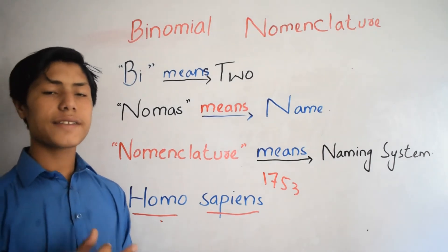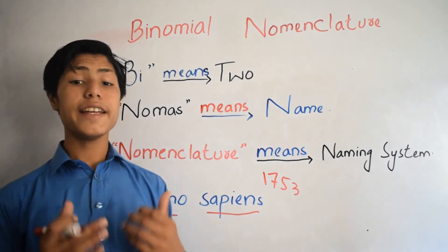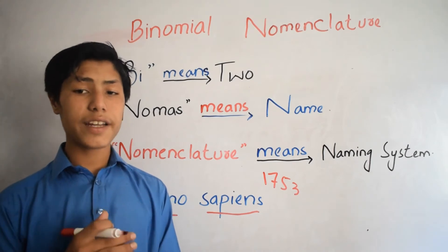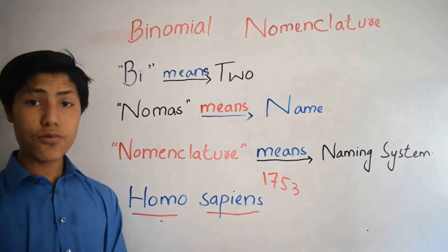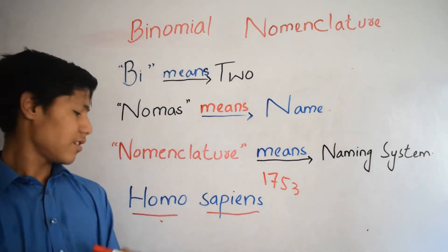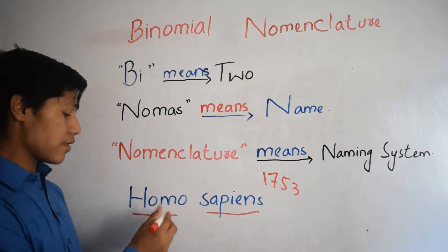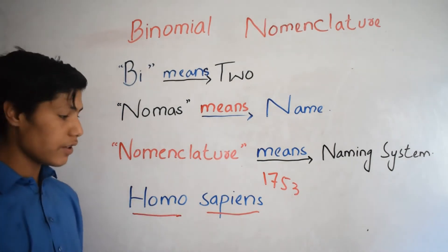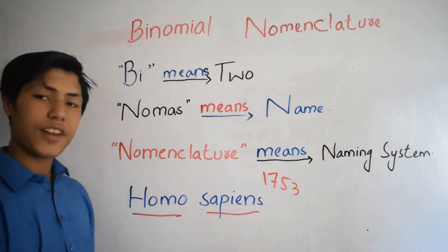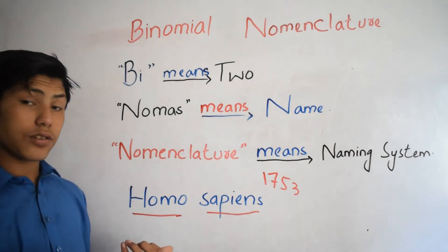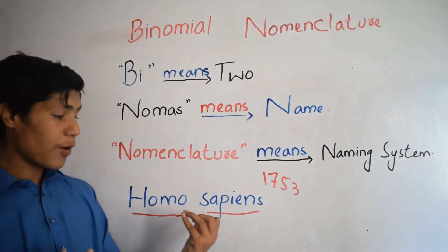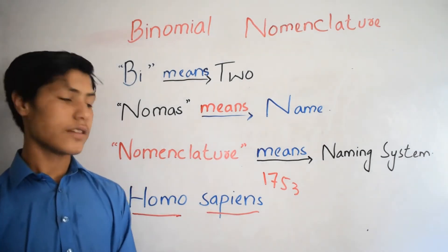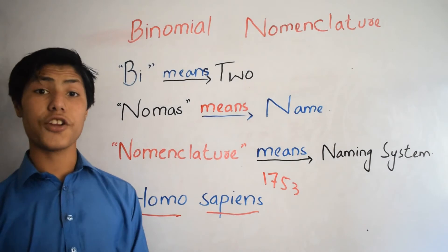The second rule states that each species has a scientific name which consists of two words. For example, homo sapiens consists of two names: homo and sapiens. This was the second rule and regulation.